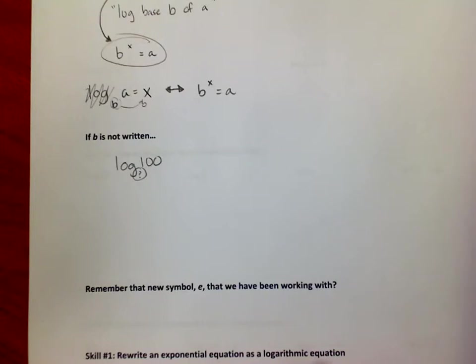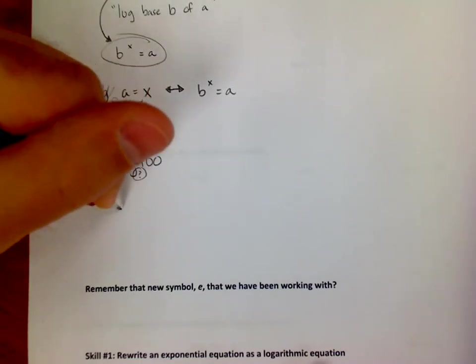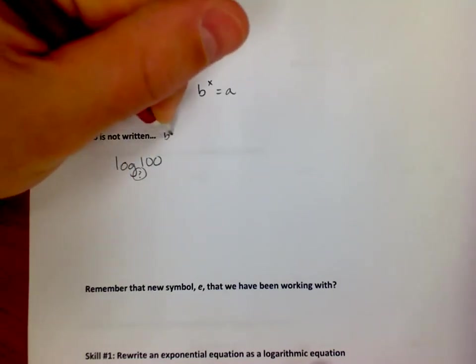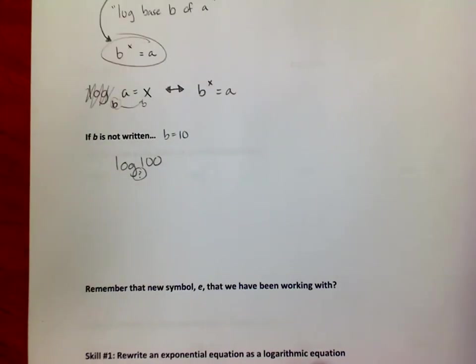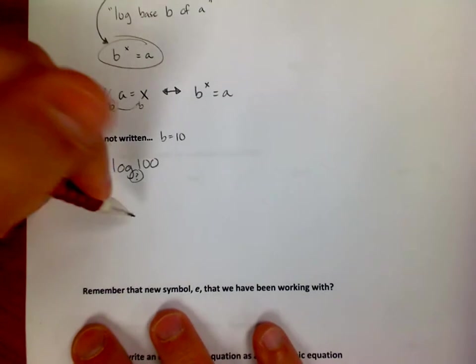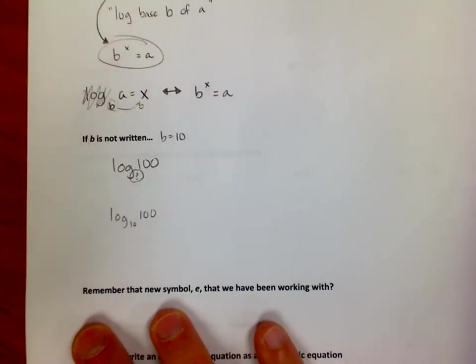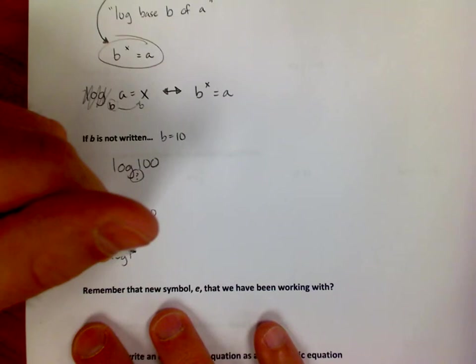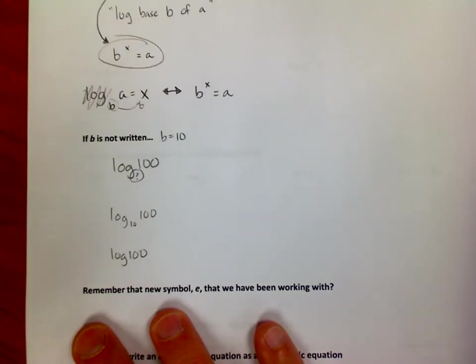And the answer is this: if it's not written, b is 10. If it's not written, you assume that it's 10. In fact, I know because if I was going to write this, if I said log base 10 of 100 or I could write it as just log of 100, because if I don't write it, it's assumed to be a 10.